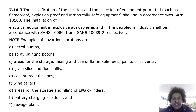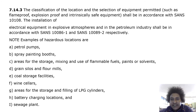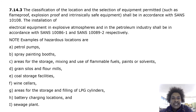The classification of the location and the selection of equipment permitted, such as flame-proof, explosion-proof and intrinsically safe equipment, shall be in accordance with SANS 10108. The installation of electrical equipment in explosive atmospheres and in the petroleum industry shall be in accordance with SANS 10086-1 and SANS 10089-2 respectively.